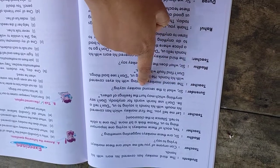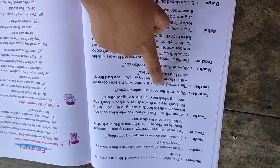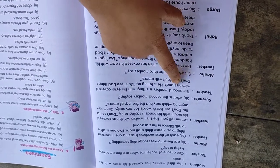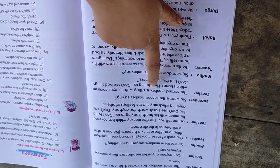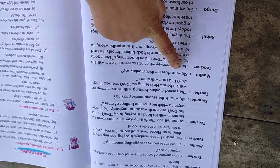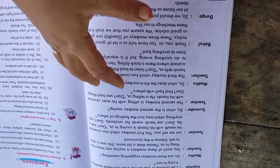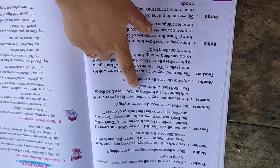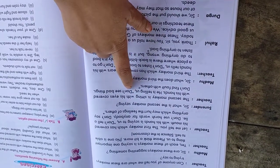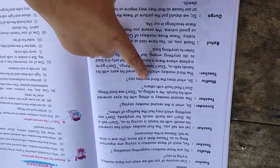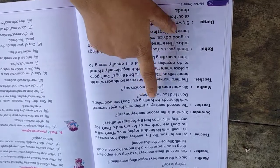Surinder asks, sir, what is the second monkey saying? The teacher says, the second monkey is sitting with his eyes covered with his hands. He is telling us, don't see bad things, don't find fault with others.